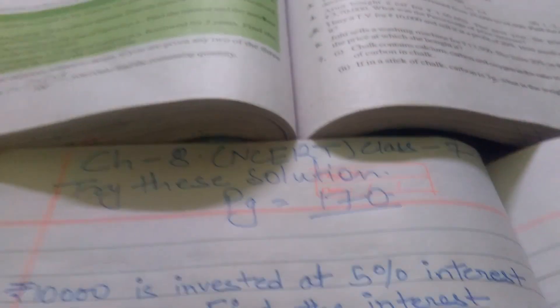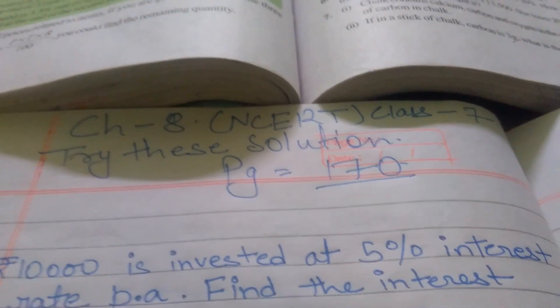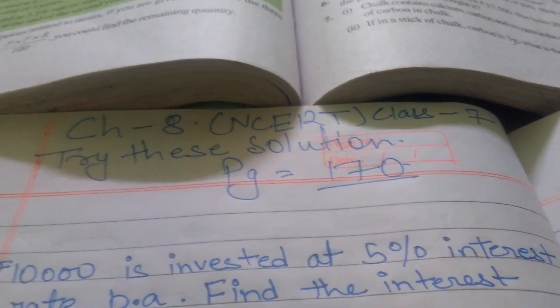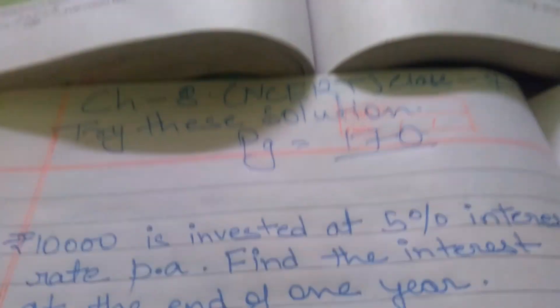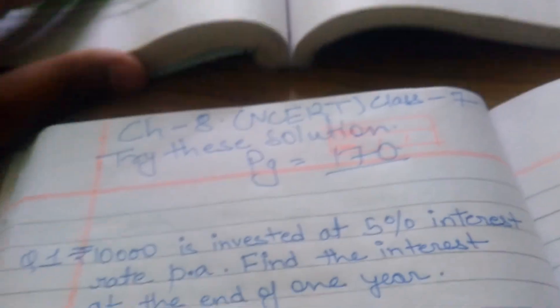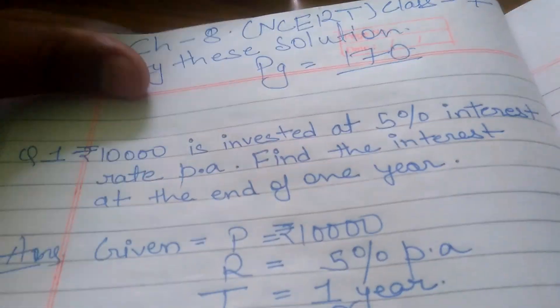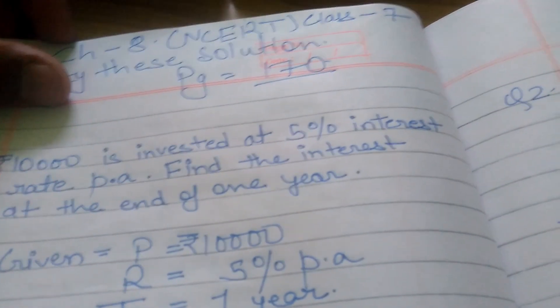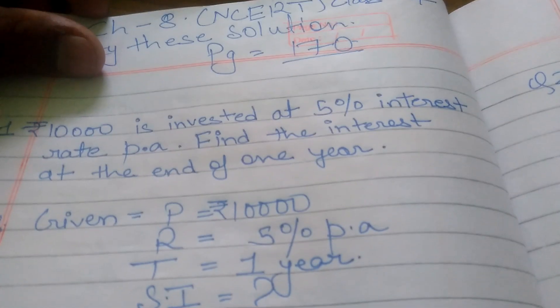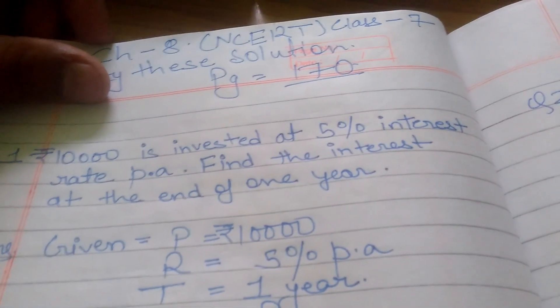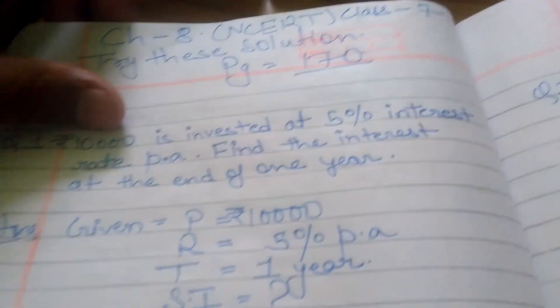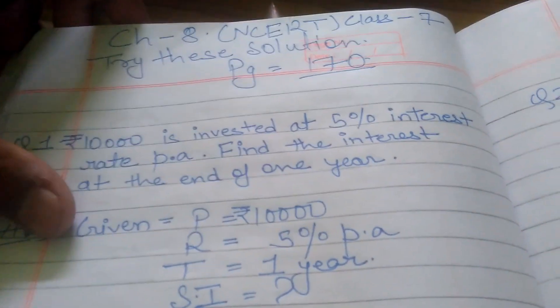Hello friends, today we are going to solve the 'Try This' problems from Chapter 8, Class 7, page number 170. I have written the questions so that I can explain easily. The first question is: ₹10,000 is invested at 5% interest rate per annum. Find the interest at the end of one year.